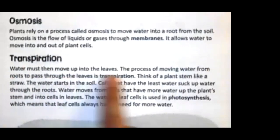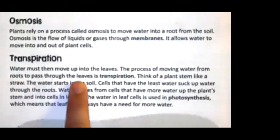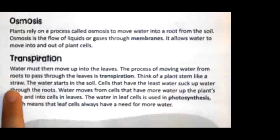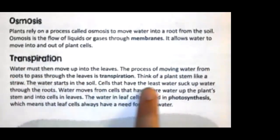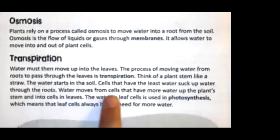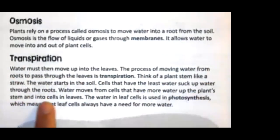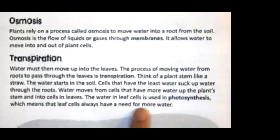The process of moving water from the roots to pass through the leaves is transpiration. Think of a plant stem like a straw. The water starts in the soil. Cells that have the least water suck up water through the roots. Water moves from cells that have more water up to the plant's stem and into the cells in leaves. The water in leaf cells is used in photosynthesis, which means that leaf cells always have a need for more water.